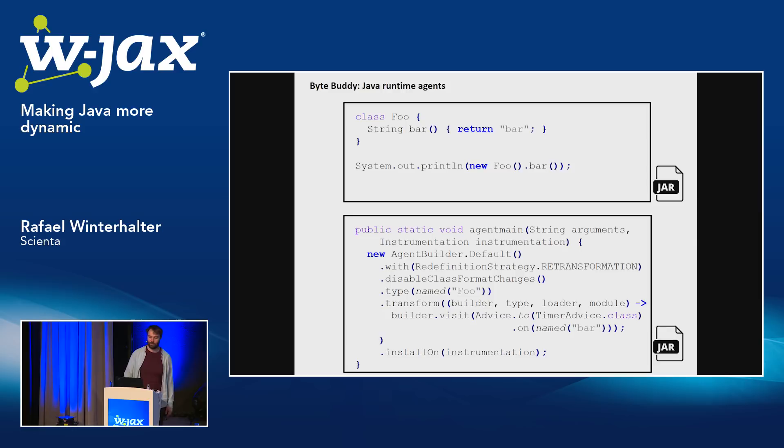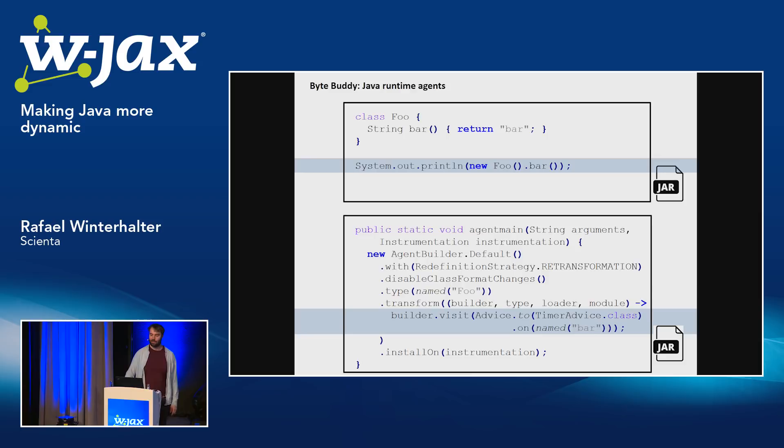You can trigger this from an agent, and now it's a more useful example. We have Foo — we're going to measure the runtime of Foo. This is all the code it needs, and it will print 'Foo bar took 16,030 nanoseconds'. This is actually running code — copy this segment, put it into a class, specify the program's javaagent, and it will work.